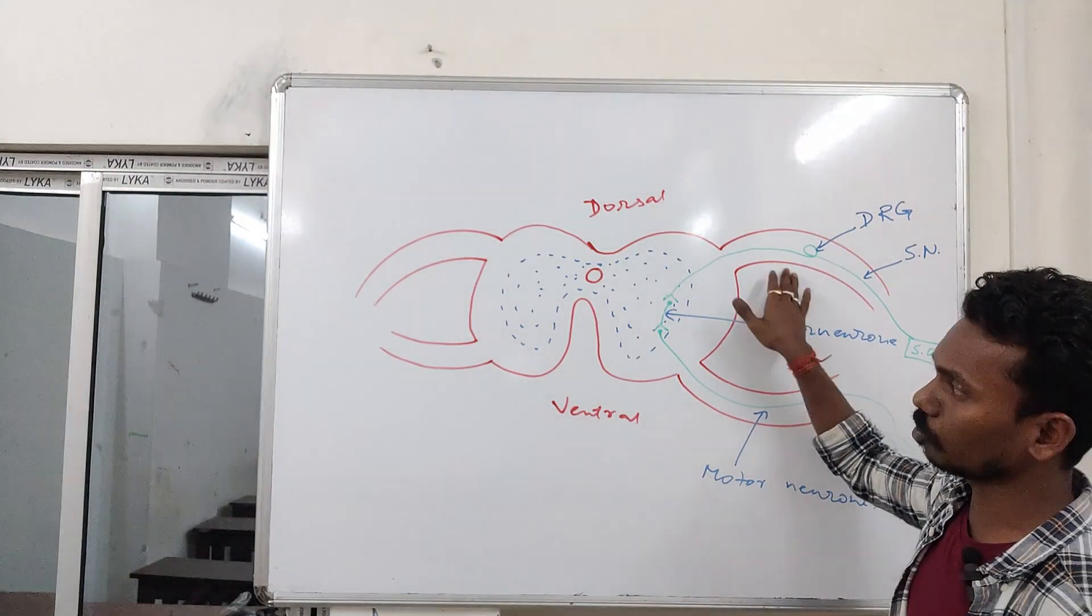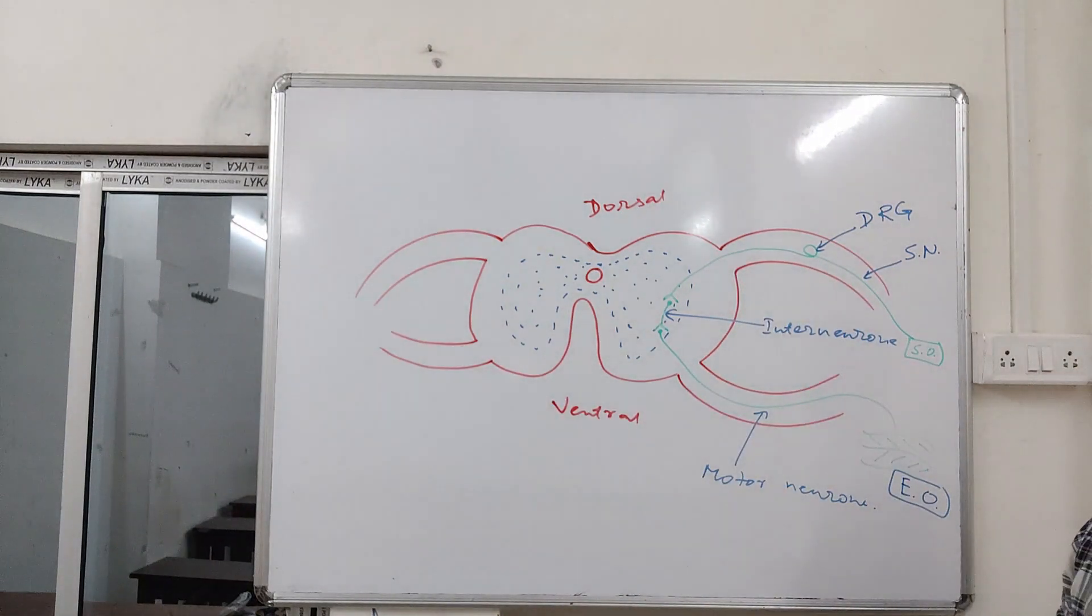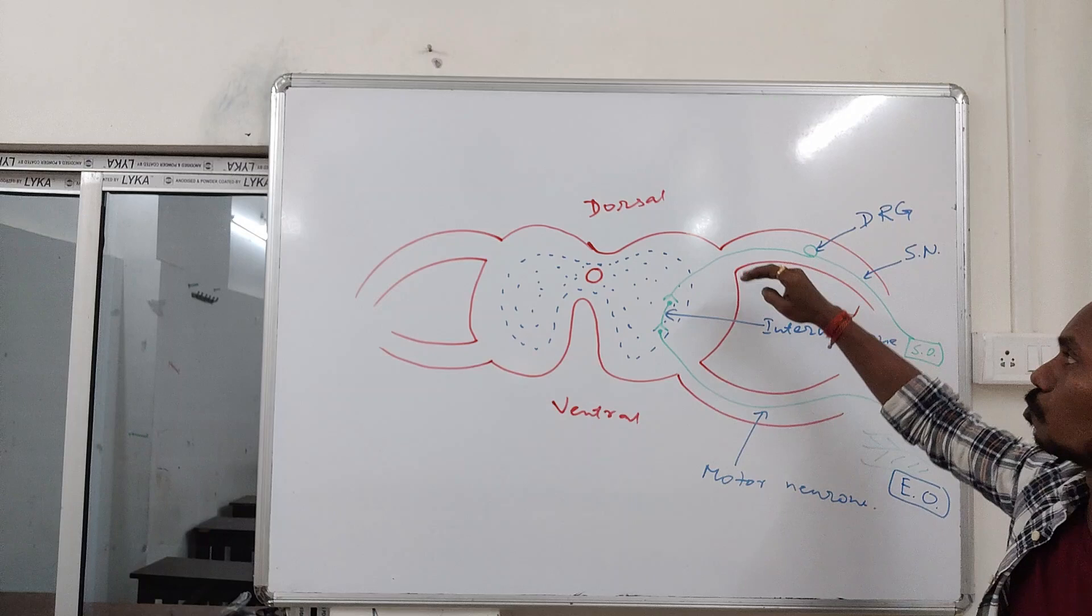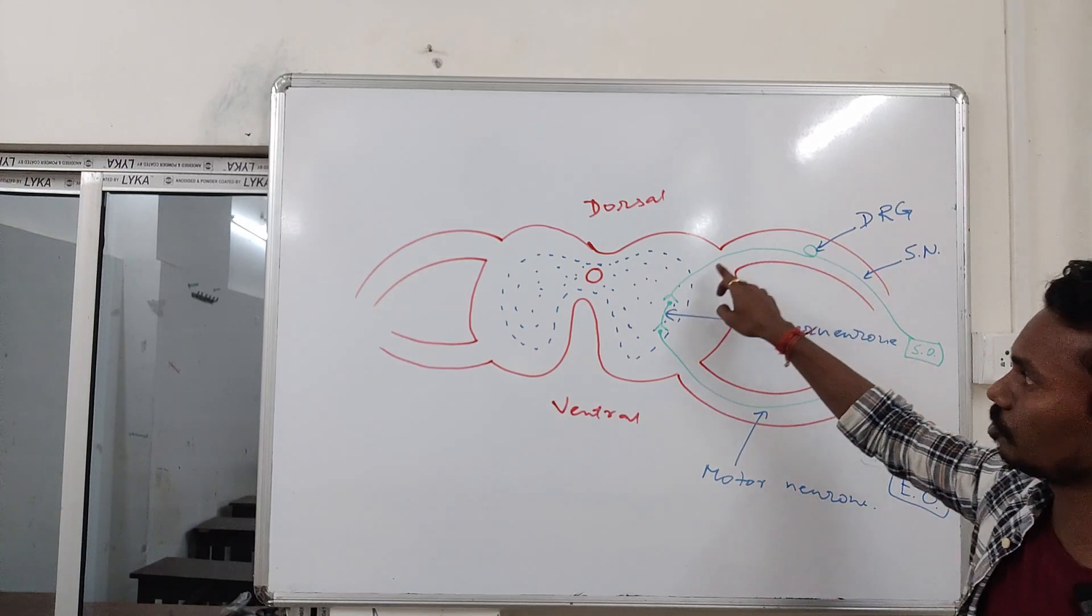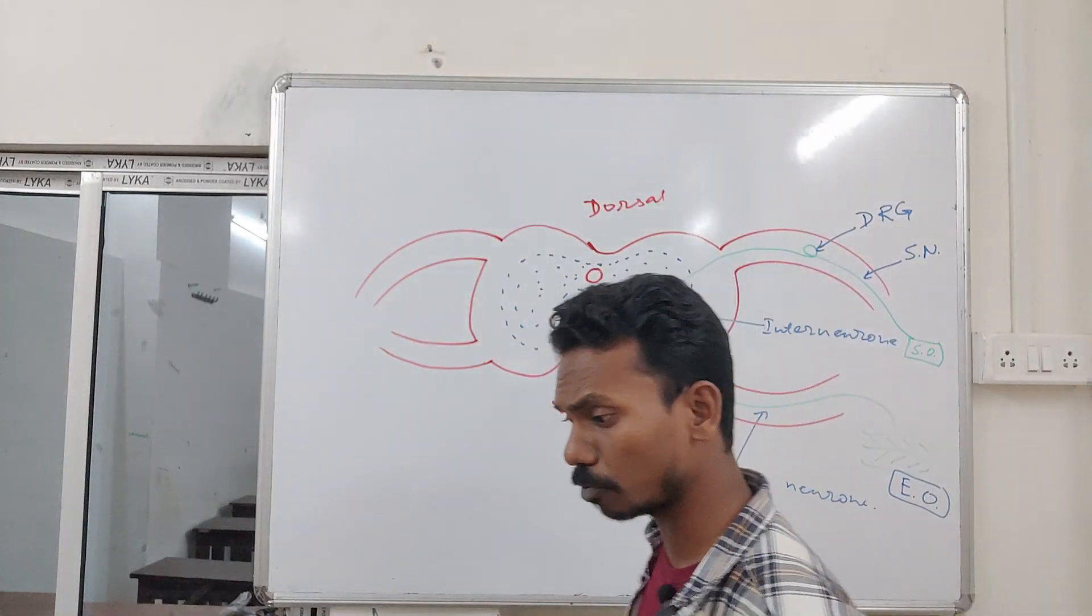This is the dorsal horn, and this one is the ventral horn. The dorsal horn or dorsal root carries your sensory neuron from the sensory organ to the central nervous system.